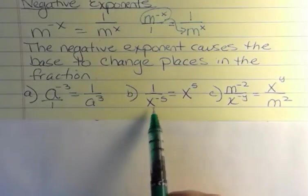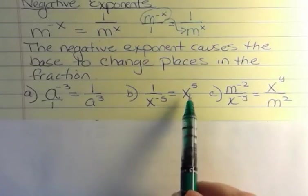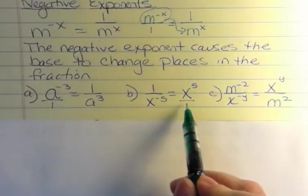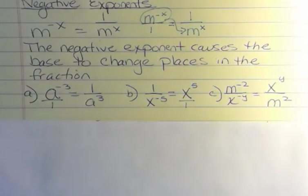For the second one, we have x to the negative fifth, which is in the denominator. So when it changes, it's going to go to the numerator. Think about it as over 1, even though we don't need to show it.